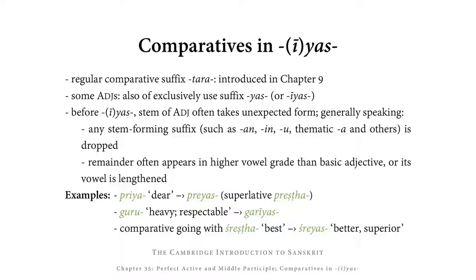However, some adjectives either also or exclusively use the suffix YAS, which sometimes appears as IAS. Before this YAS or IAS, the stem of the adjective often takes an unexpected form: any stem-forming suffix at the end of the adjective stem — such as AN, IN, U, thematic A, and various others — is often dropped. The remainder often appears in a higher vowel grade, or the vowel may be lengthened. For example, from PRIYA, meaning 'dear,' we get the comparative PREYAS, meaning 'dearer,' with the superlative PREESHTA, 'dearest.'